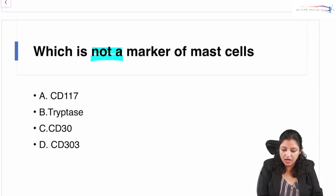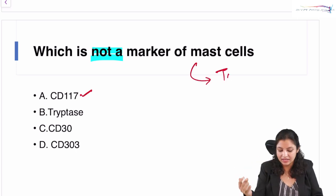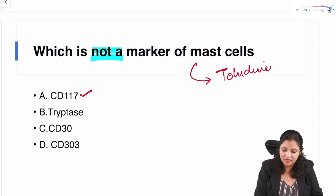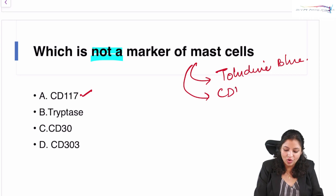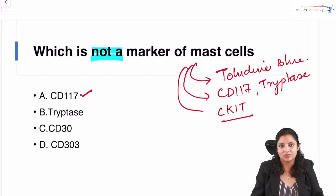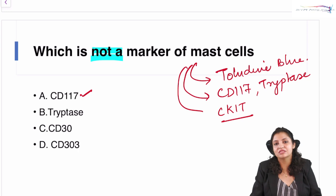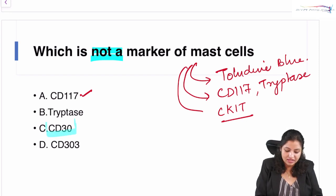Question number two: which is NOT a marker of mast cells? This has been asked in INICT so many times. You all know CD117 is a marker of mast cells. Toluidine blue is the simplest stain to identify mast cells. Mast cells are positive for CD117, tryptase, and CKIT mutation is present in mastocytosis. According to the recent WHO classification, the new marker added for neoplastic mast cells is CD30.